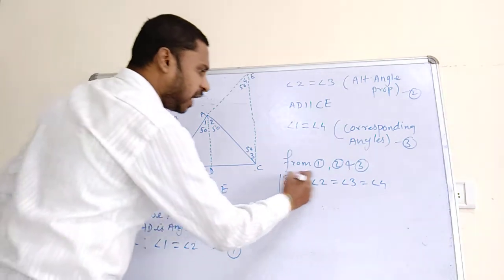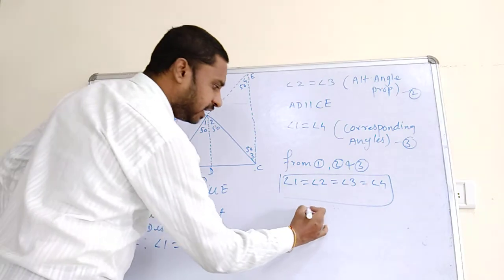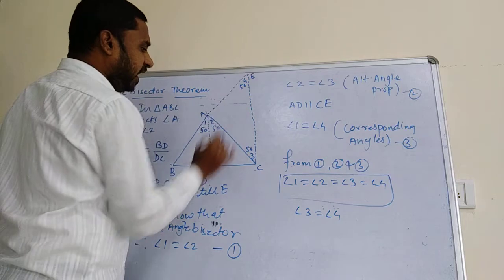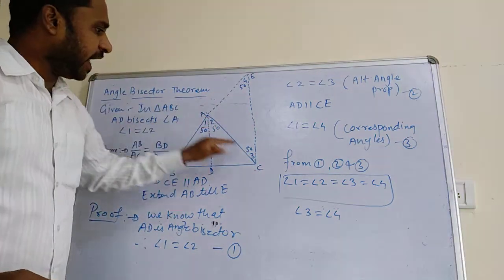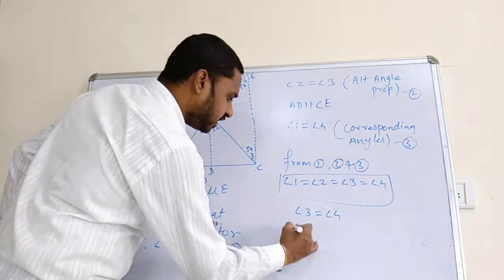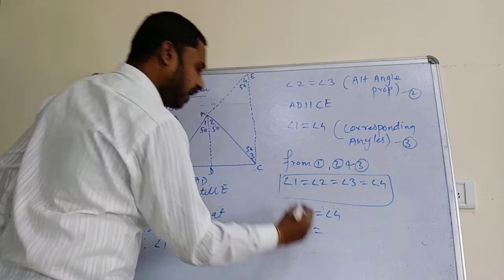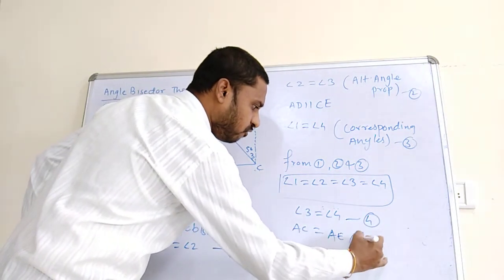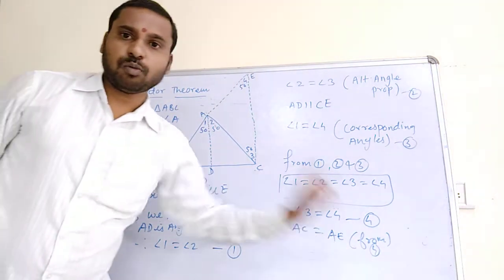We can now notice that Angle 3 is equal to Angle 4. Therefore, Triangle ACE is an isosceles triangle because its base angles are equal. Therefore, AC is equal to AE. You can write this as Equation Number 4.